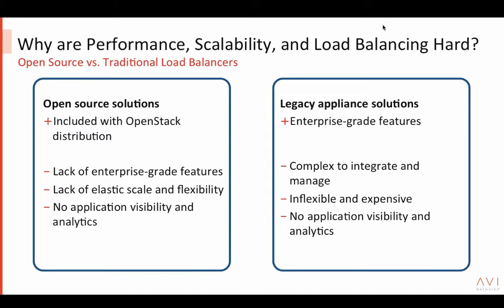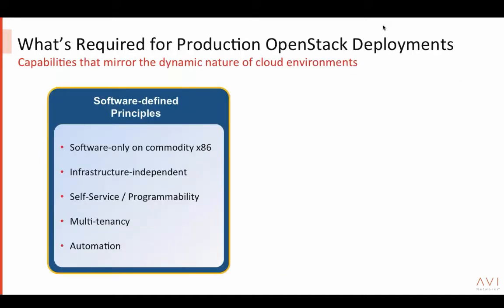Let's take a step back and ask: what do you need for production OpenStack deployment? How do you mirror the capabilities of a dynamic cloud deployment? There are some core software-defined principles you need. You need a software-only solution that runs on commodity x86. You don't want to be anchored by a legacy hardware appliance solution. You want it to be infrastructure-independent.